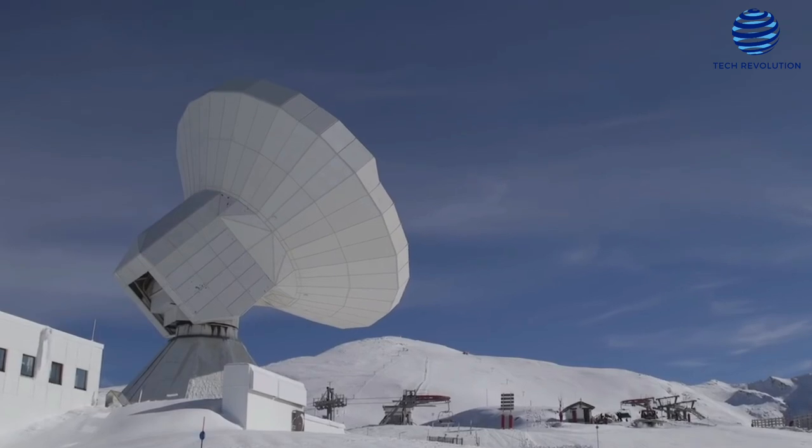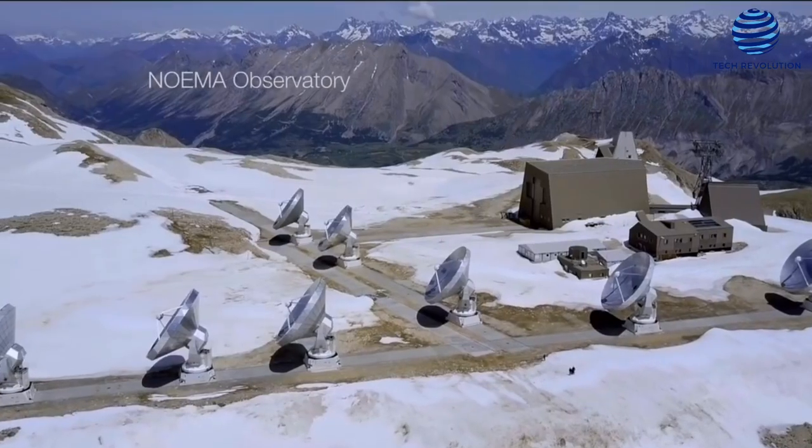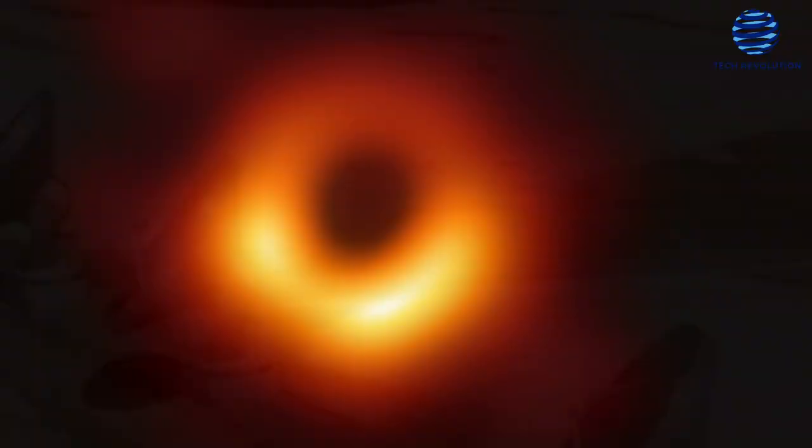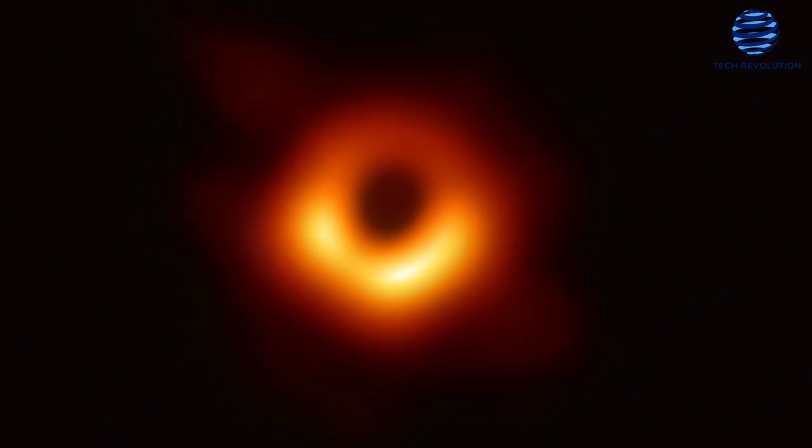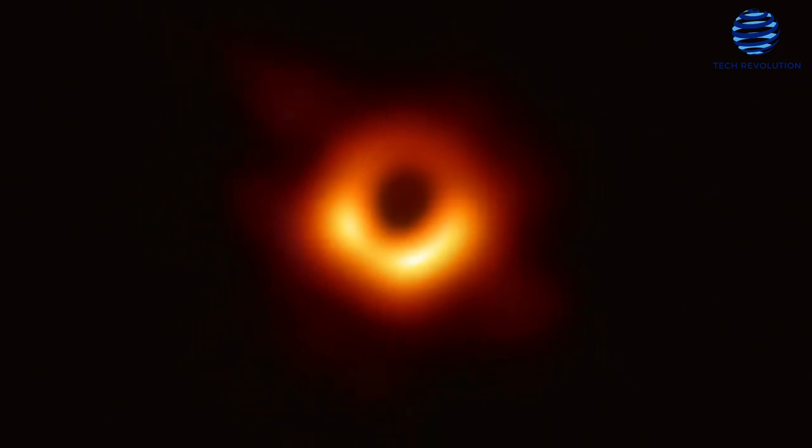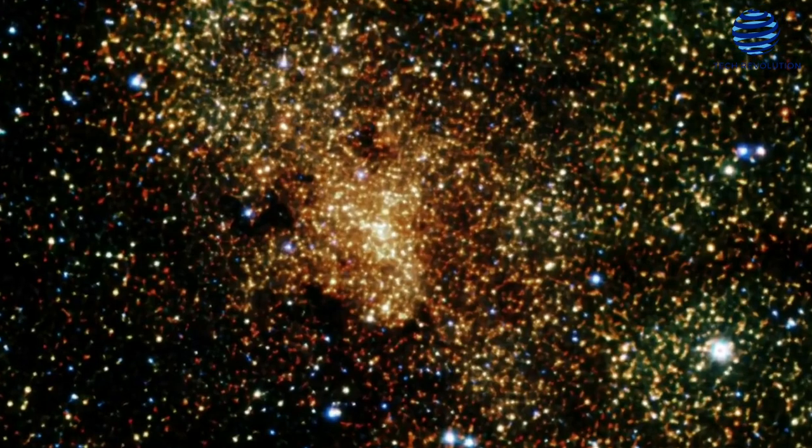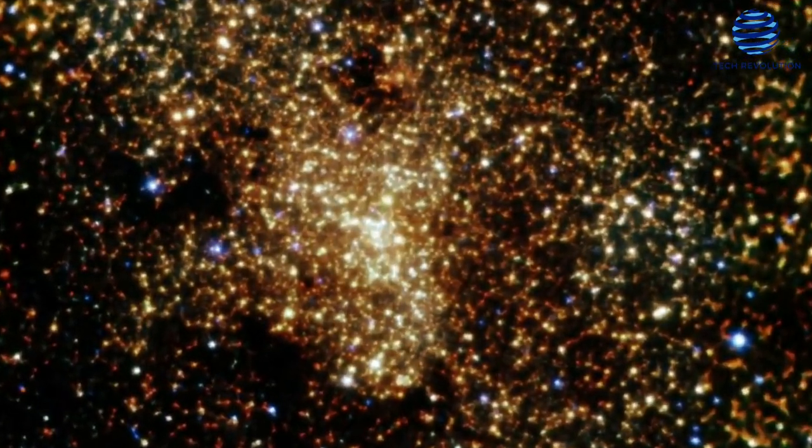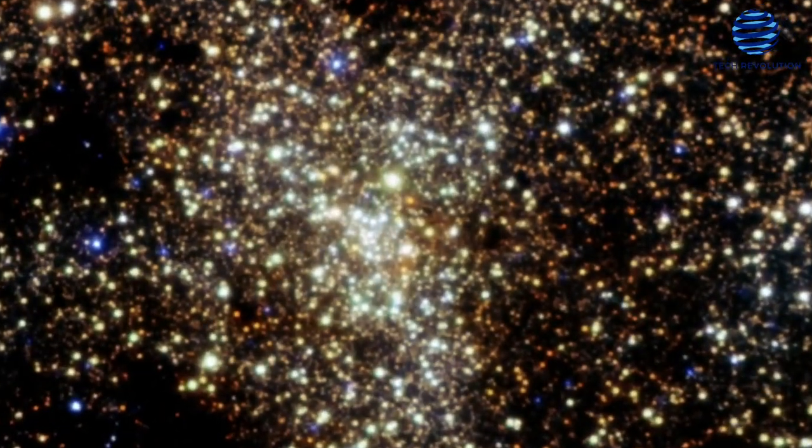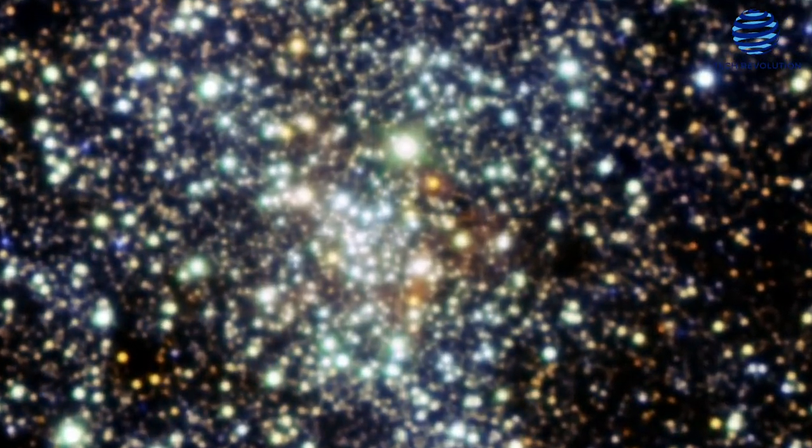EHT is a network of eight ground-based radio telescopes that caught the first image of a black hole, M87, in 2019. Webb will eventually image Sagittarius A in two infrared wavelengths from a perch in deep space free of stray light.